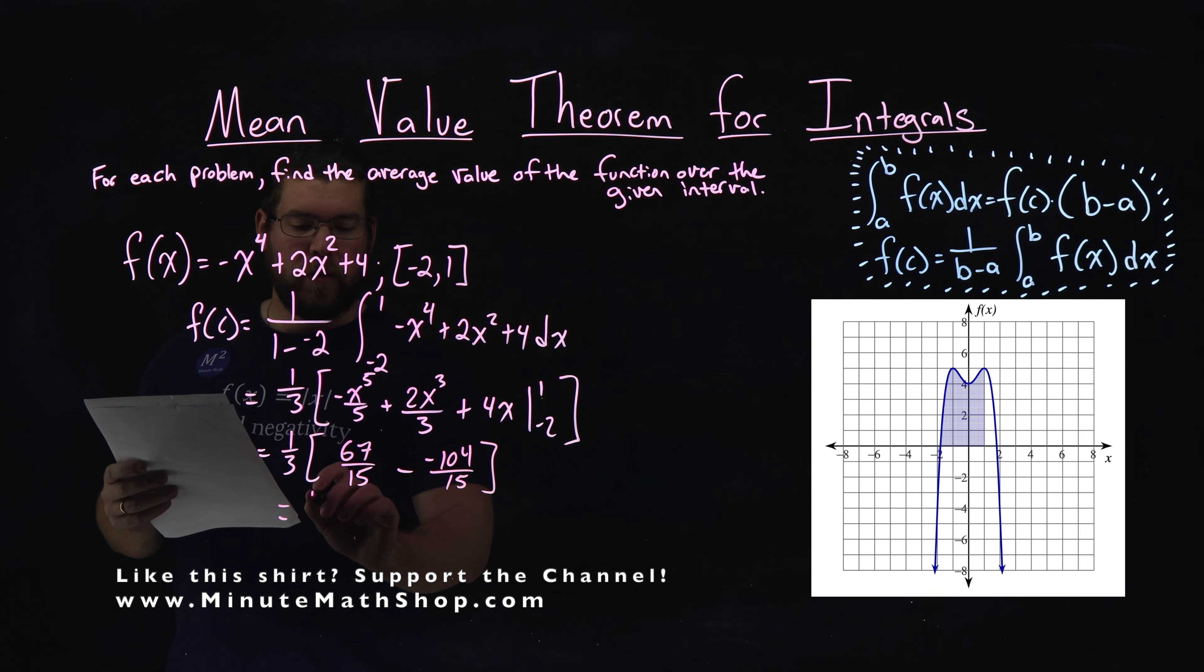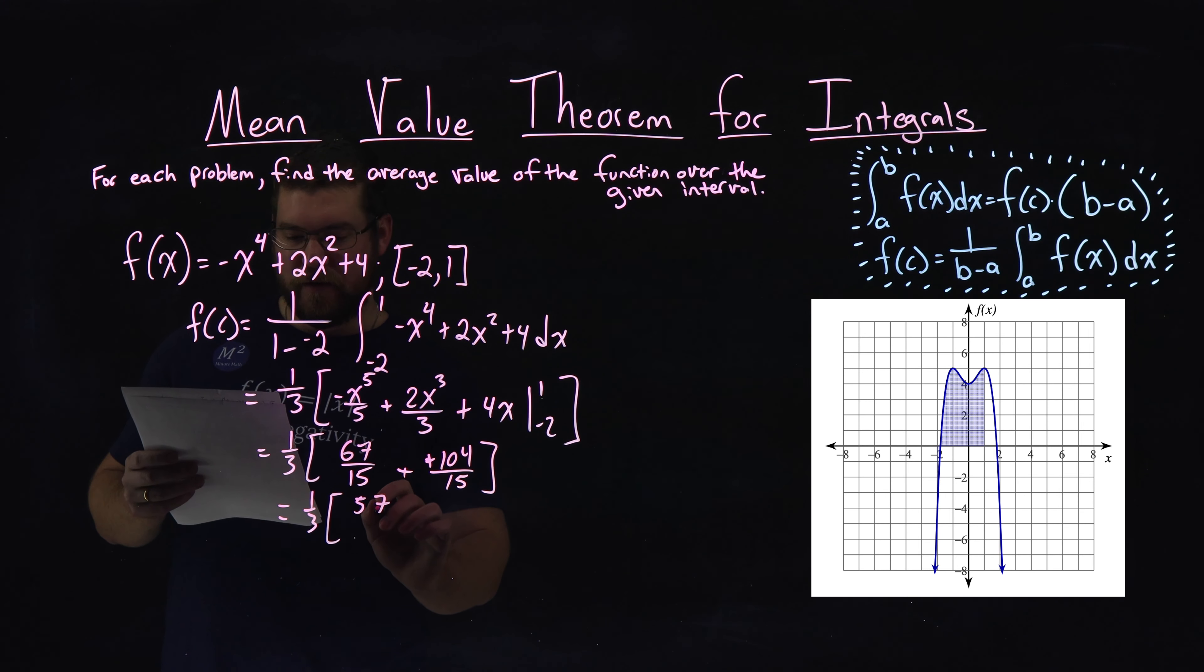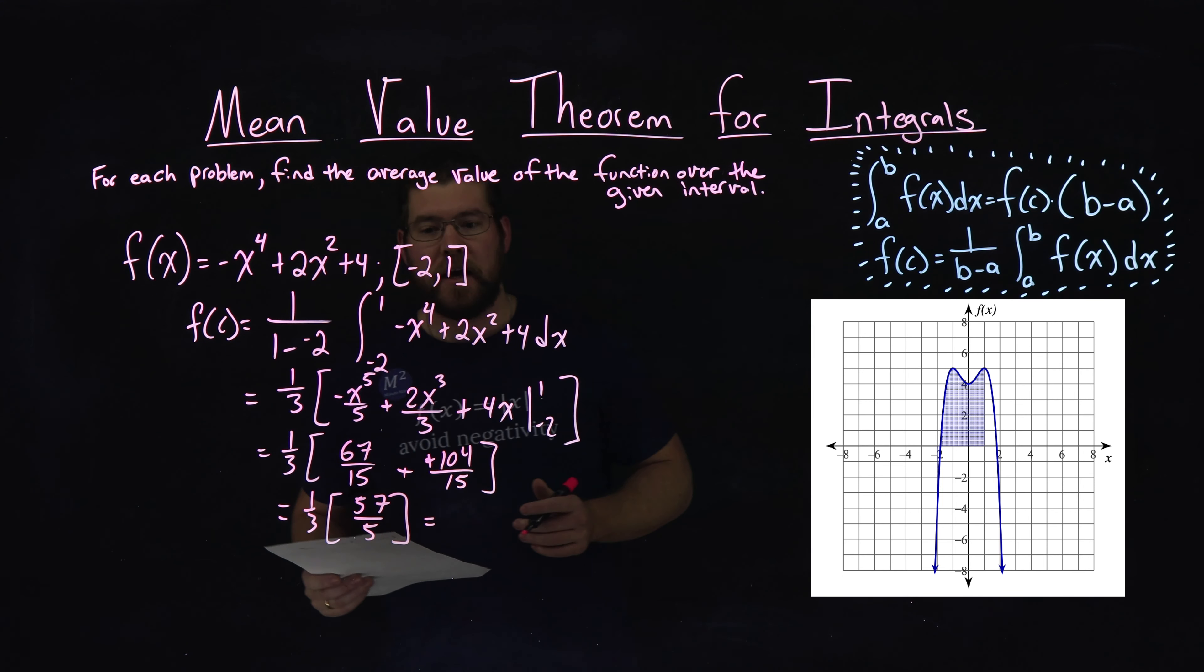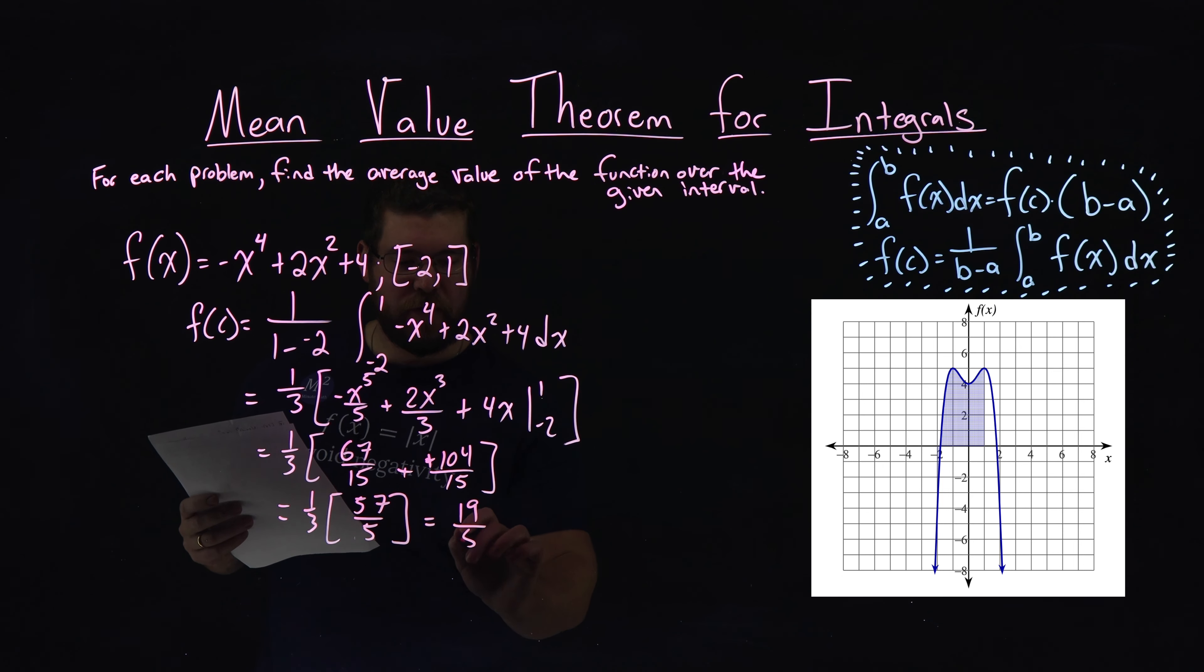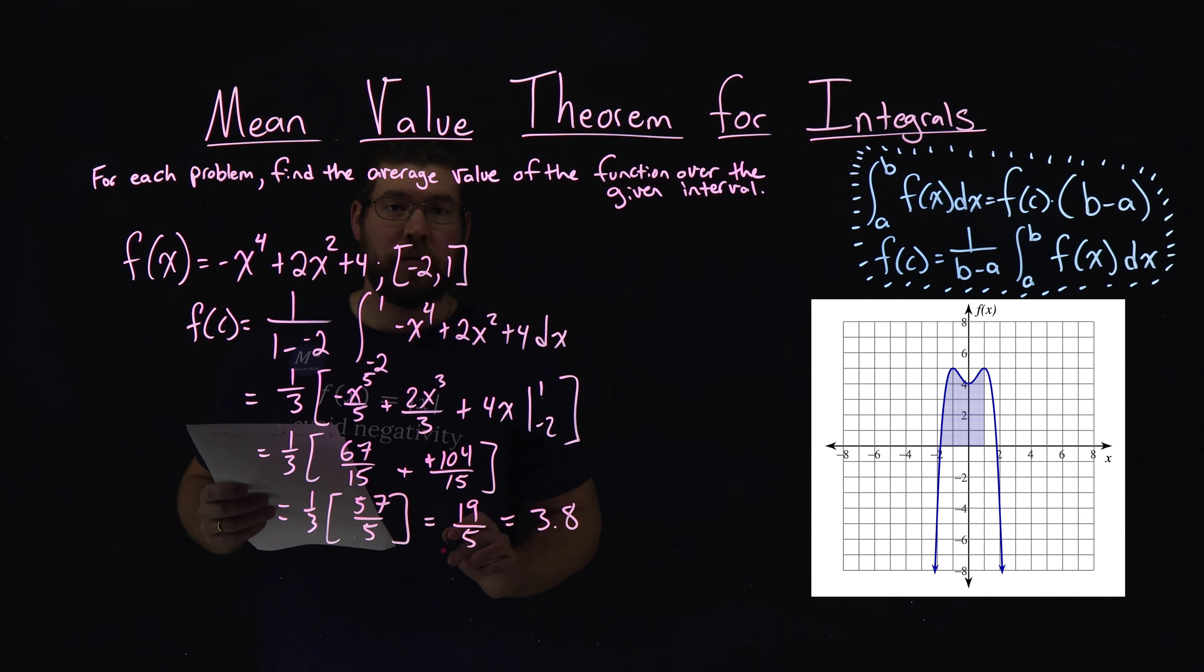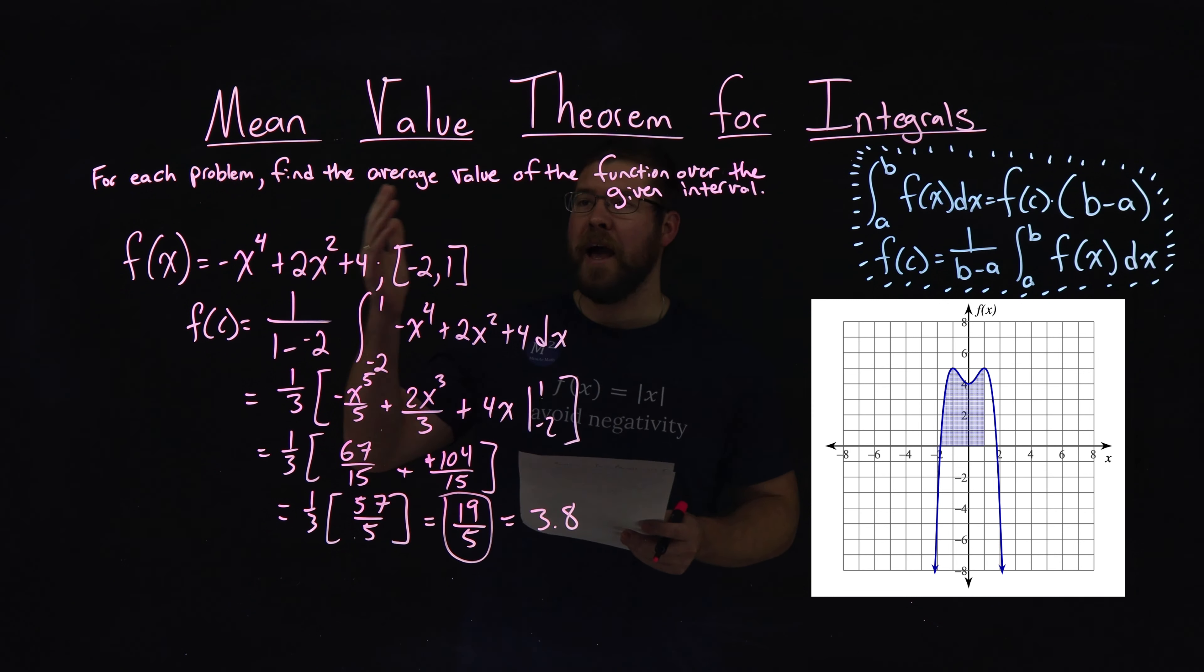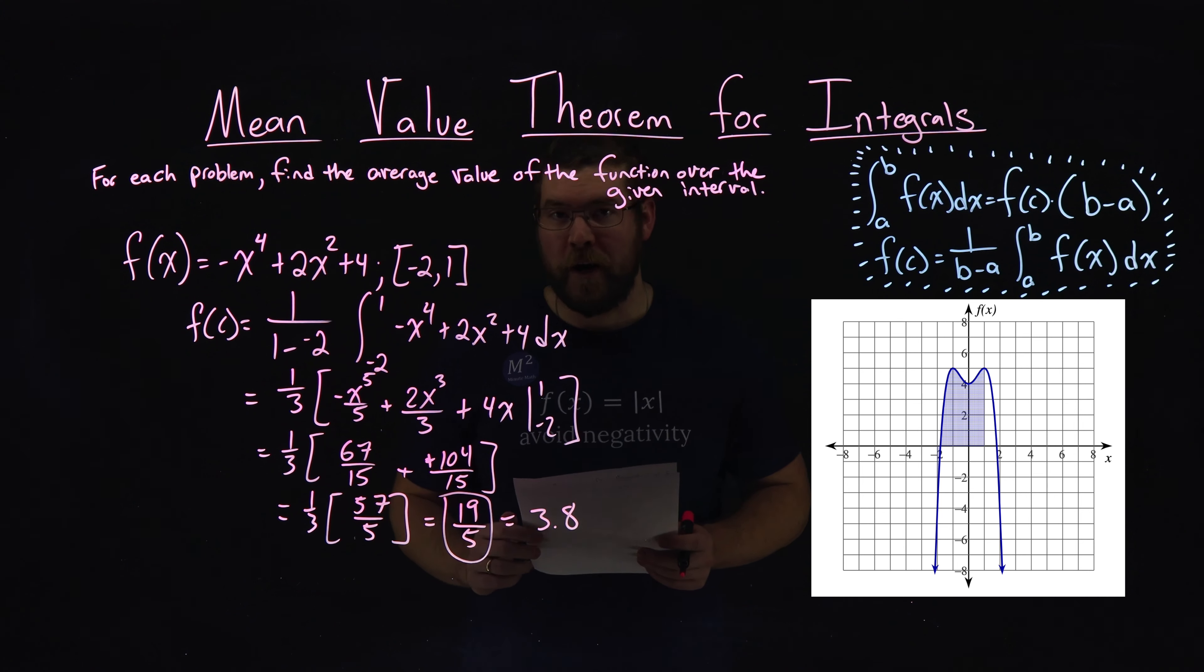All right, so now we're going to simplify this. Well, 1 third stays out front, 67 over 15 minus negative 104 over 15, or plus a positive, comes out to be 57 over 5. 1 third times 57 over 5 comes out to be 19 over 5 simplified, which equals 3.8 as a decimal. Let's keep it as 19 over 5 as my answer here, and so the average value of our function over our given interval is 19 over 5.